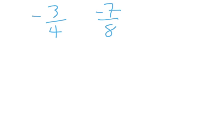I'm looking for a rational number between negative three-fourths and negative seven-eighths. Before I can do a trick similar to what I did before, I really have to have these guys having a common denominator. A common denominator here would be eight.